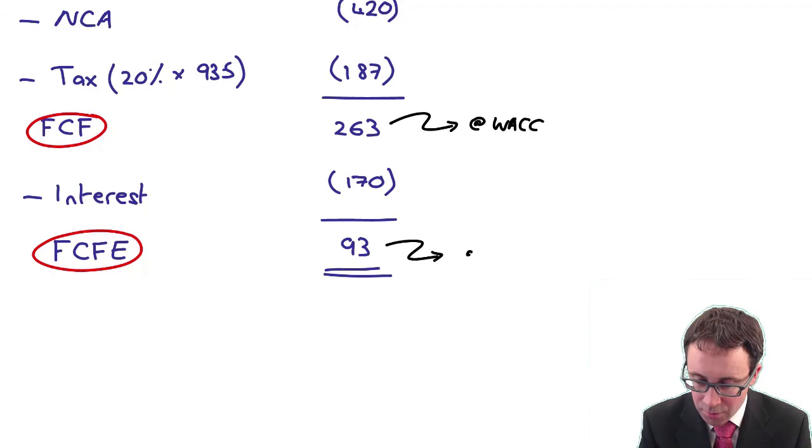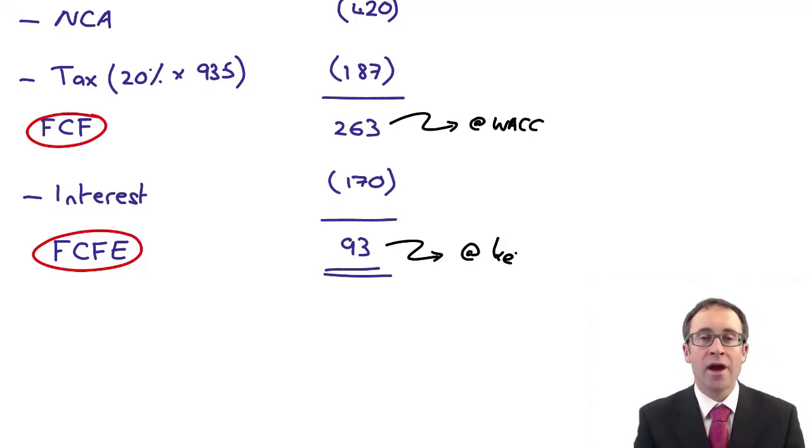The free cash flows to equity, we would discount those at a discount rate appropriate for your equity holders, so therefore that will be discounted at the cost of equity, which will give you directly the value of equity. So that's just a brief example looking at calculating the free cash flows and free cash flow to equity. We'll move on within the next example and then begin to start using those figures we've calculated to work out the actual value of the equity. So I shall see you all in a minute.